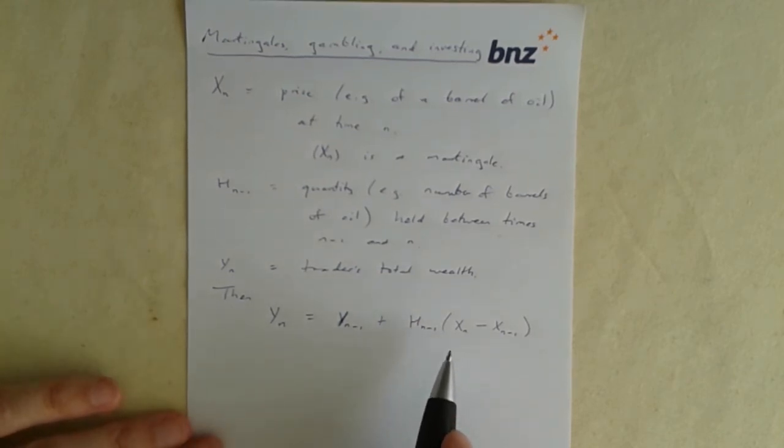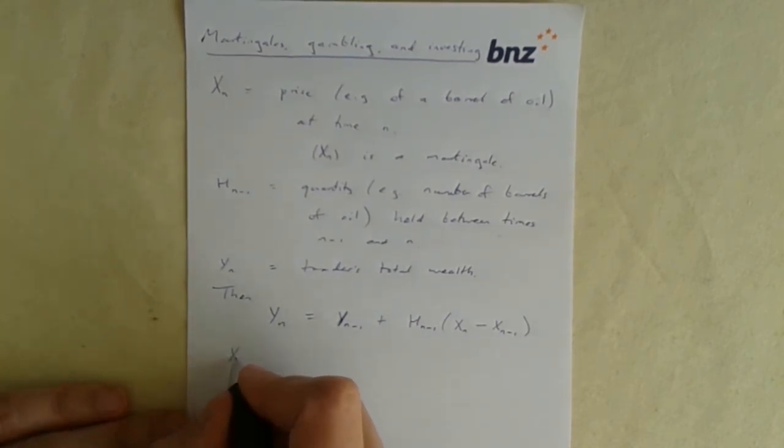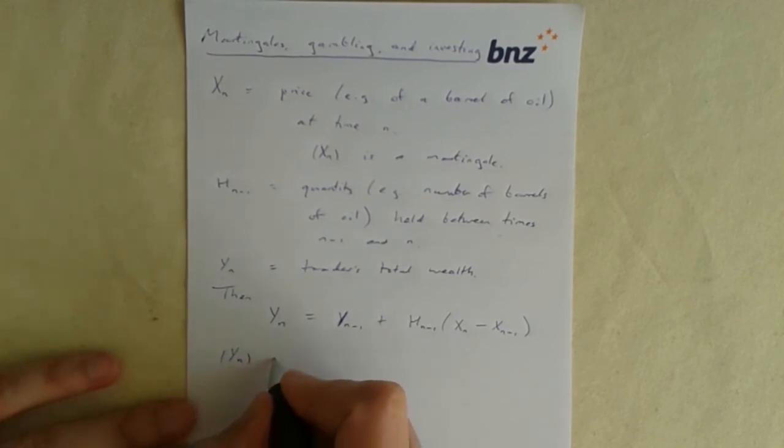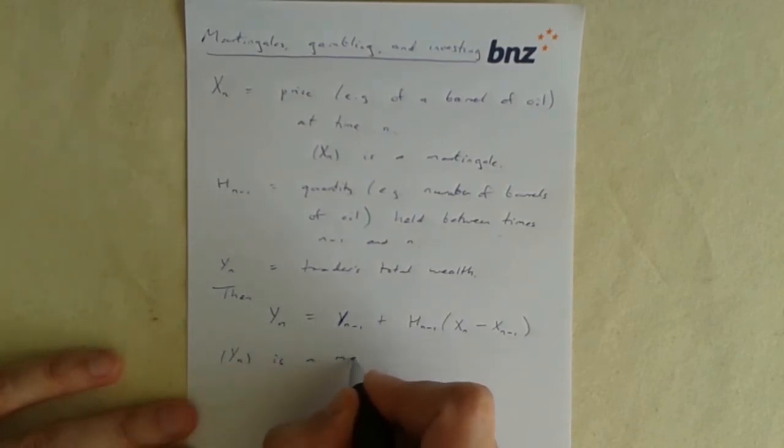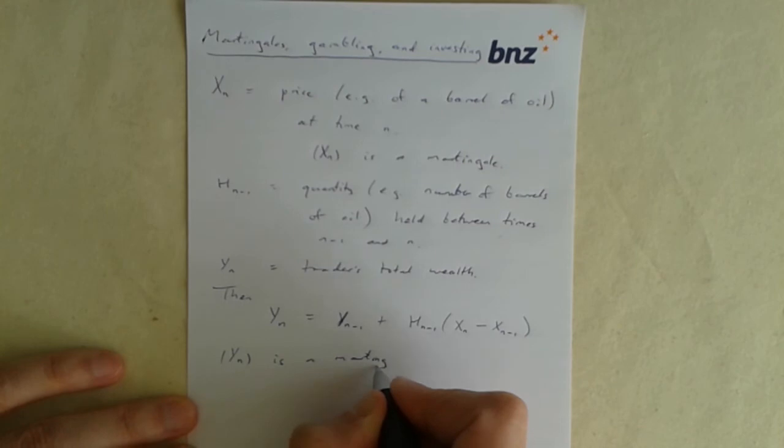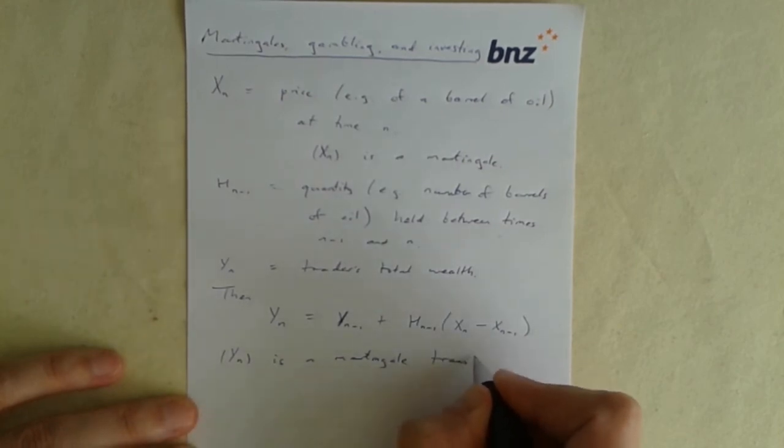So if xn is greater than x n minus 1, this is a positive difference. The price of oil has gone up. And so if he's holding some barrels of oil over that interval, then his total wealth in the world will have increased by this amount.